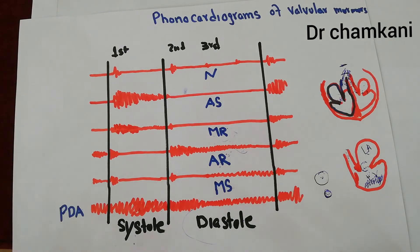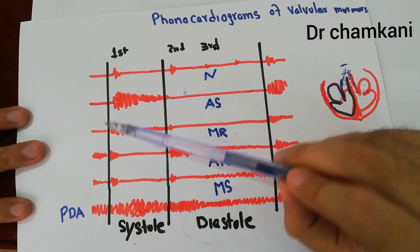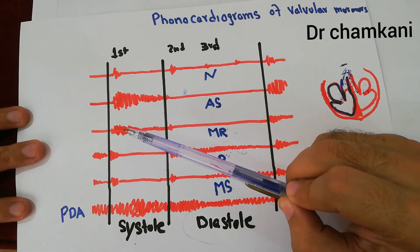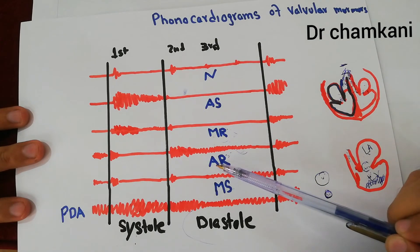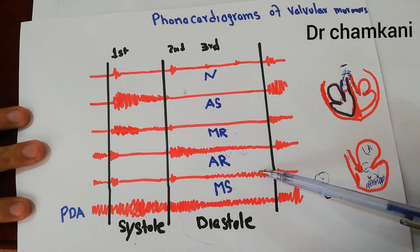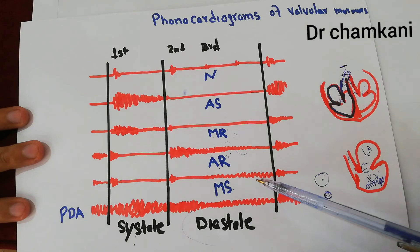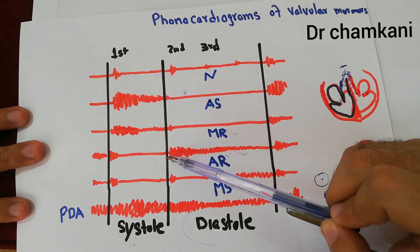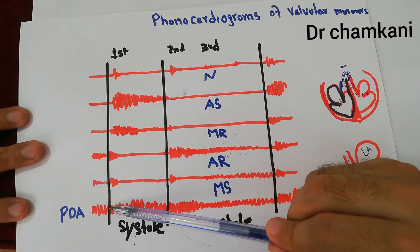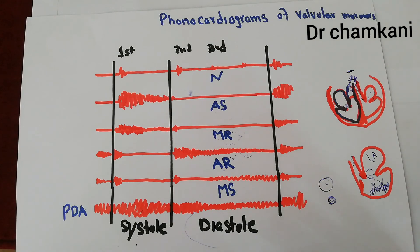To summarize the phonocardiograms: the first heart sound is heard at the start of systole; the second heart sound at the start of diastole. The aortic stenosis murmur is quite loud and heard in systole. The mitral regurgitation murmur is also loud and heard in systole. The aortic regurgitation murmur is loud and heard in early diastole. The mitral stenosis murmur has very low loudness and is heard at the end of diastole. The PDA machinery murmur is heard continuously throughout both systole and diastole.